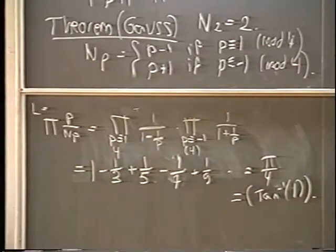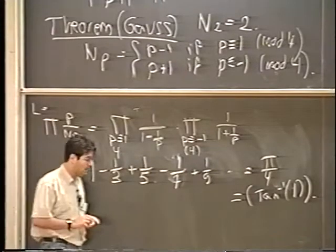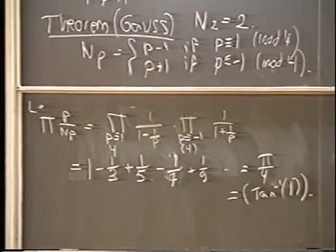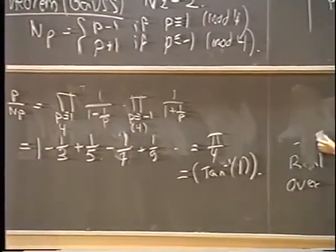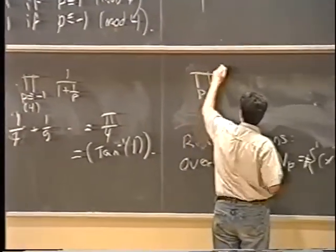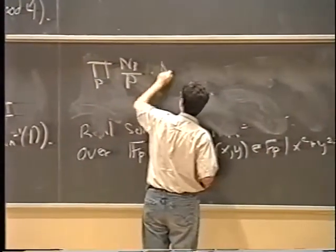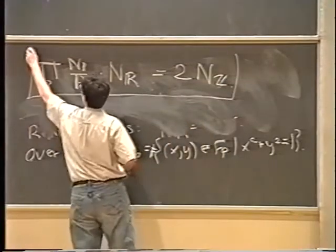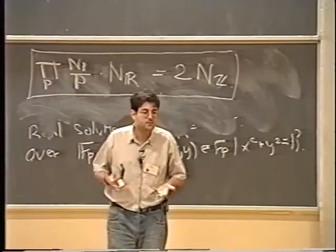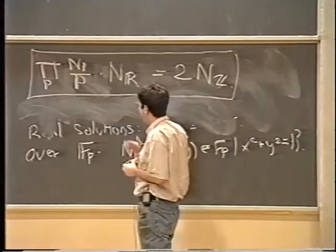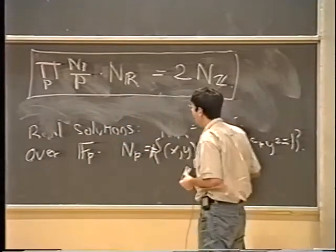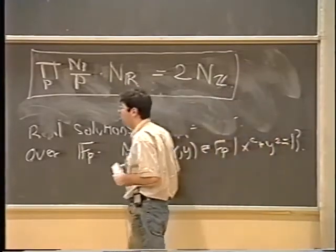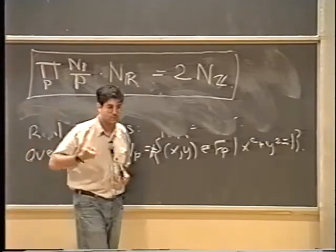Combining this with the formula for N_r (the length of the circle) and the number of integer solutions N_z, you find the following rather tantalizing formula: the product over all primes of N_p/p, times N_r, equals 2 times the number of integer solutions. Although I gave you the proof and it's quite simple, this formula is still very mysterious — it seems to tell us that there's a deep relationship between the number of solutions modulo the various primes and the behavior over the real numbers. The equation viewed over finite fields somehow knows something about π.